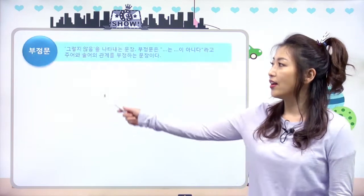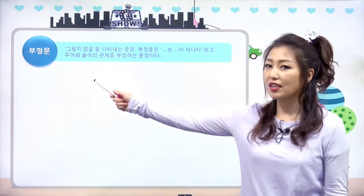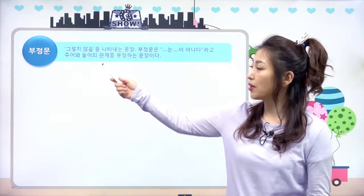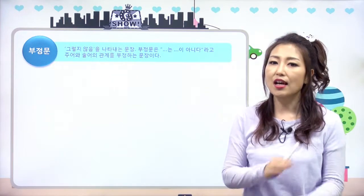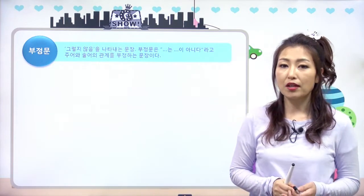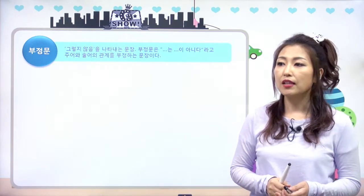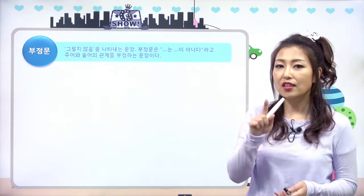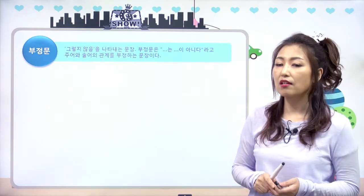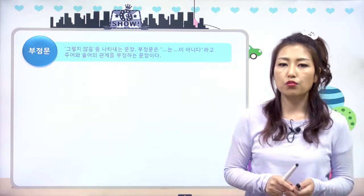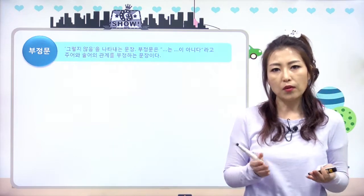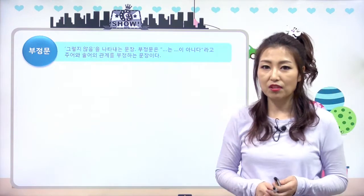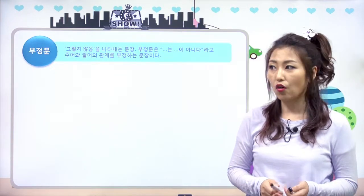부정문이라 함은, 기억이 안 나는 친구들을 위해서 한 번 더 설명하면, '그렇지 않다'라고 얘기하는 거예요. 쉽게 말하면 '나 먹었어'가 아니라 '나 먹지 않았어' 이렇게 얘기하는 게 부정문이에요. 일반 동사는 부정문을 어떻게 만드는지 궁금하죠? 비동사는 그냥 not만 갖다 붙이면 됐는데, 일반 동사는 비동사와 달리 도움을 받아야 돼요.